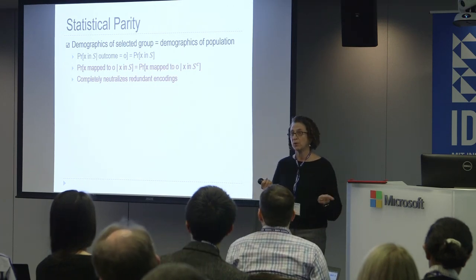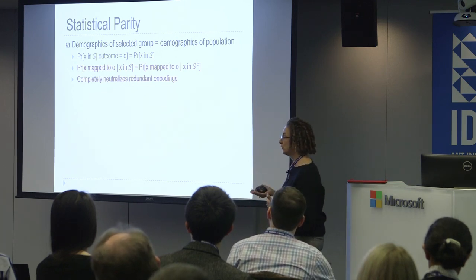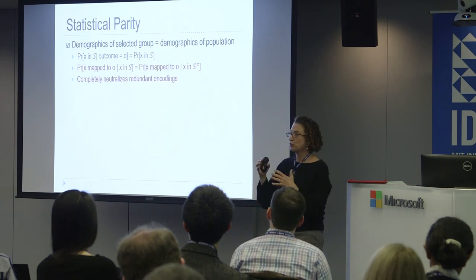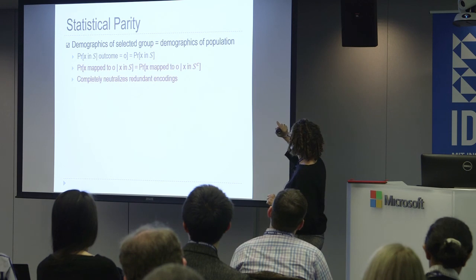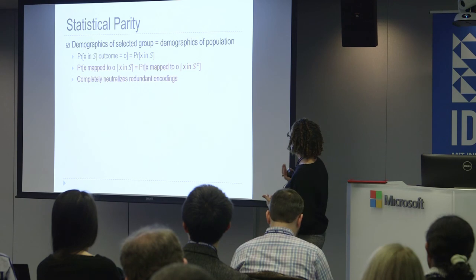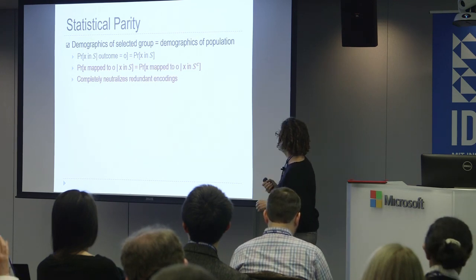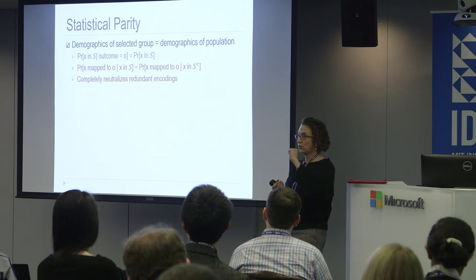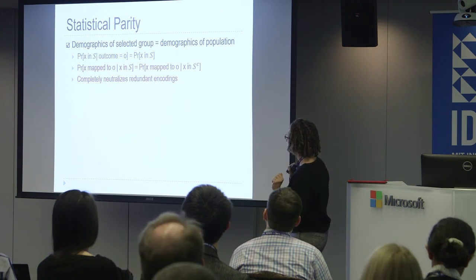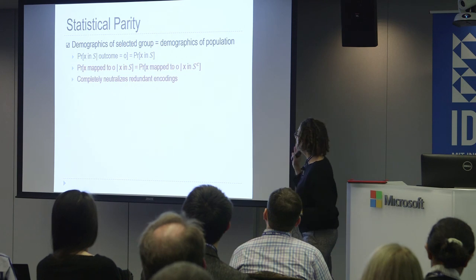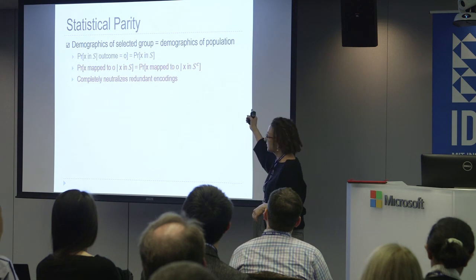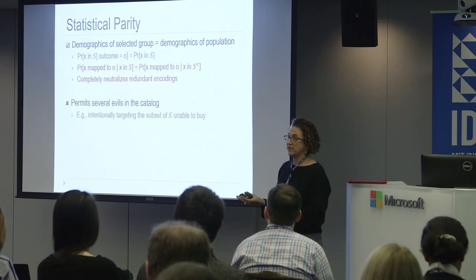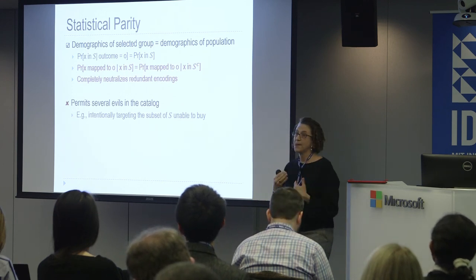We imagine that we have people and we are mapping them to classification outcomes. A classifier might be determining, for example, whether you should get a loan or not, or perhaps what kind of terms you should get for your credit card. What statistical parity says is that the demographics of the group that you select — for your university, for your loans, and so on — should be the same as the demographics of the underlying population. More formally, the probability, given that you have been mapped to a certain outcome O, that you're a member of S, is the same as the probability that if we draw from the population as a whole you'll get a member of S. This turns out to be equivalent to saying that the probability that you're mapped to a particular outcome is independent of whether you're in a minority group S or in the complement of S. This completely neutralizes redundant encodings, but it still permits some of the evils in the catalog, such as retargeting the subset of S that is unable to buy.